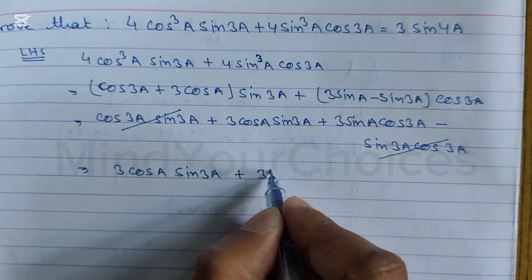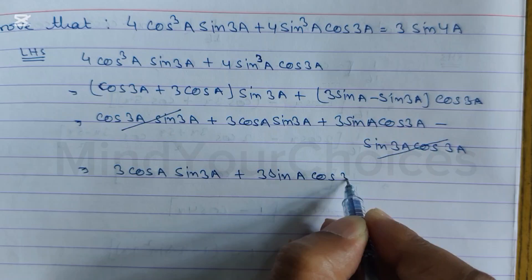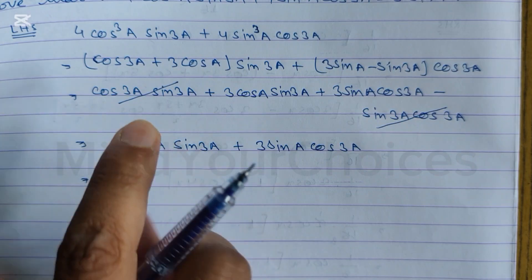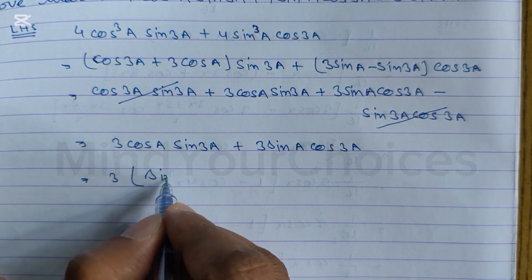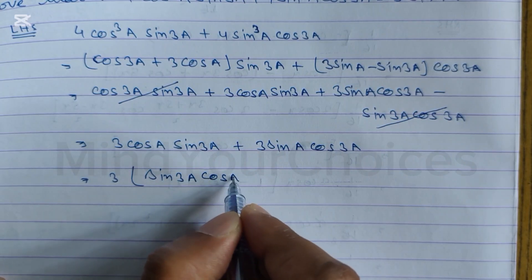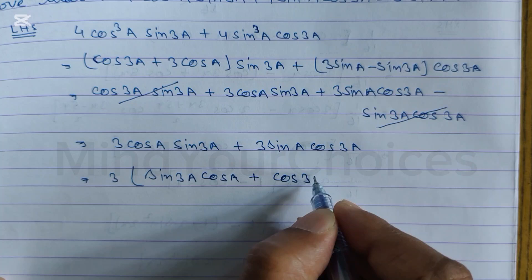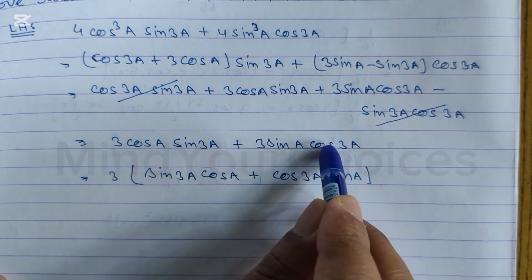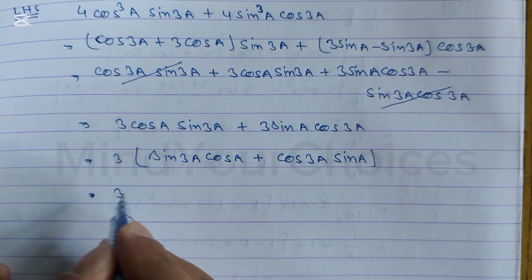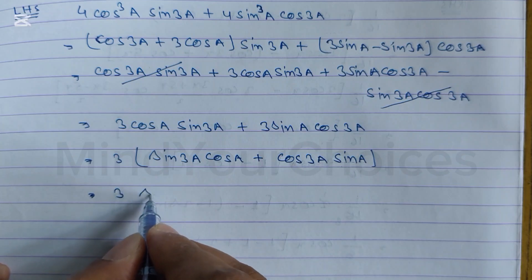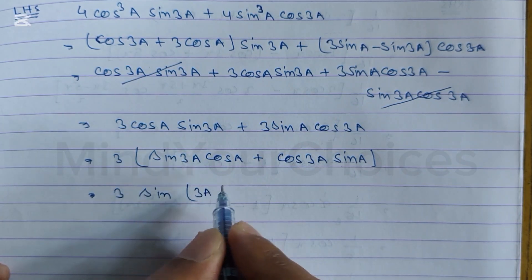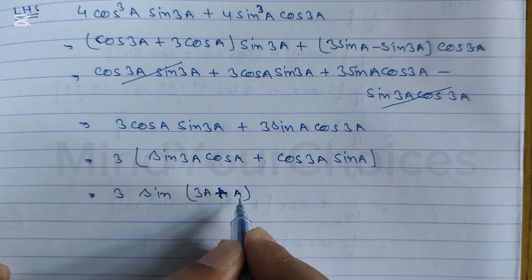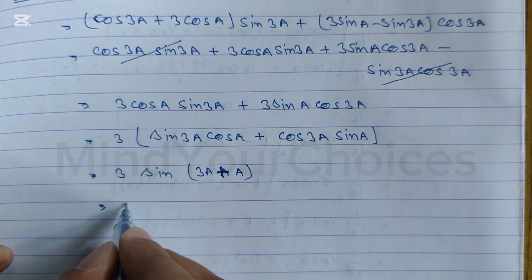Now we can write: 3(cosa·sin3a + sina·cos3a). We use the formula sin(A+B) = sinA·cosB + cosA·sinB. Here, placing A as 3a and B as a, we get sin(3a + a), so we can write three times sin(3a + a).